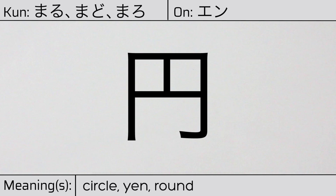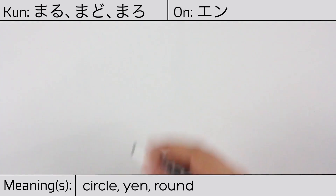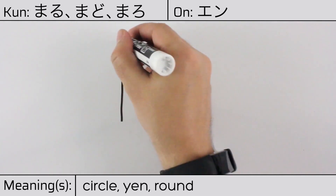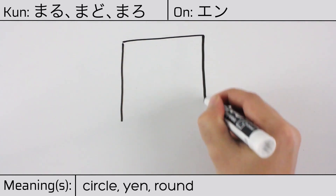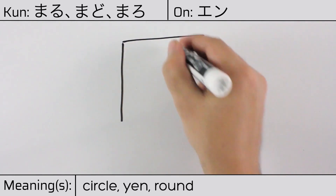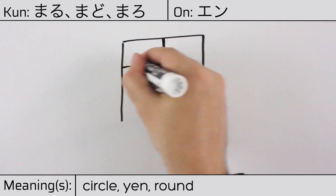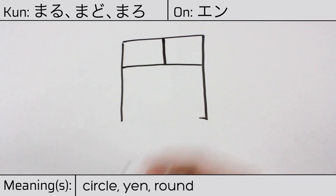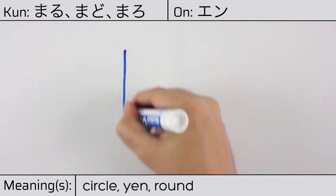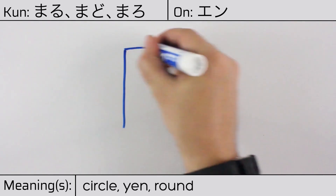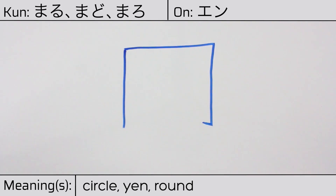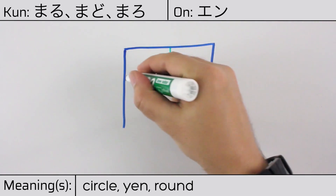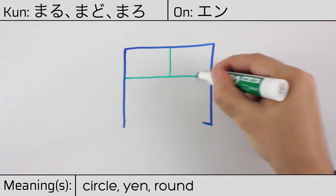Here is the stroke order. This character is made up of the following radicals or parts: The enclosure radical, known as keigamae. A vertical stroke and a horizontal stroke.